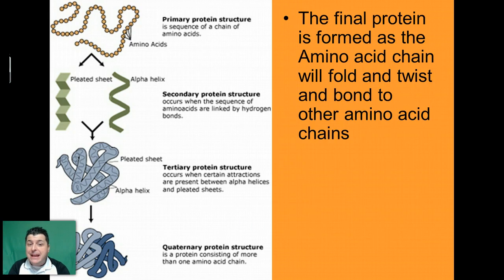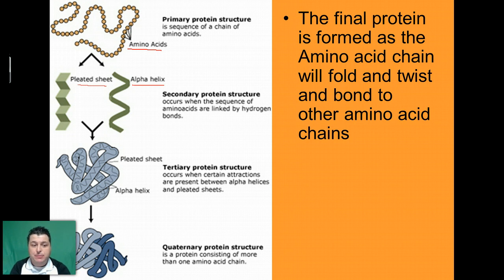The final protein will be formed as that amino acid sequence begins to fold into pleated sheets or twist into alpha helices, and then bond with other amino acid chains to produce that final three-dimensional protein — the quaternary protein structure — which then gives us our particular trait or our particular enzyme.